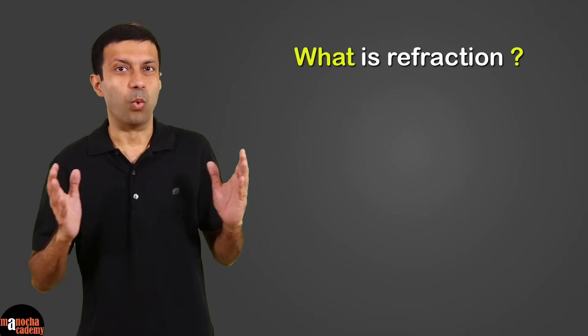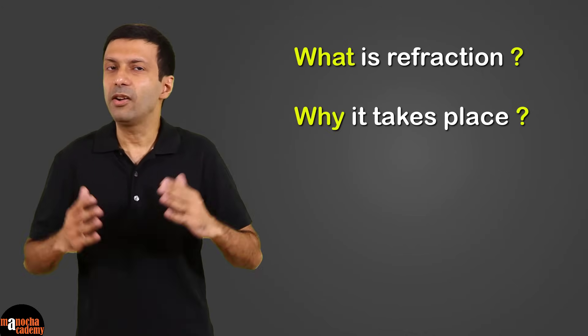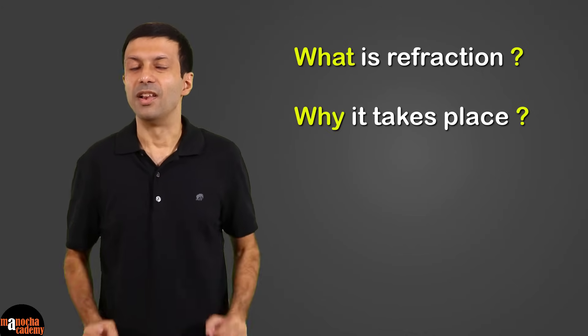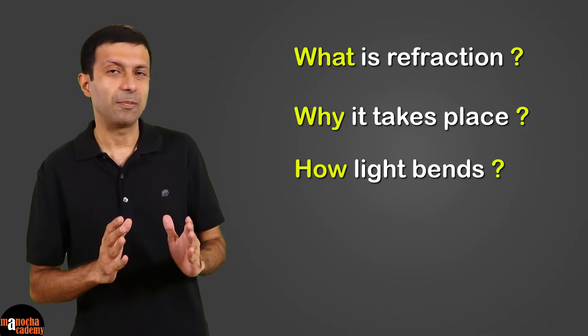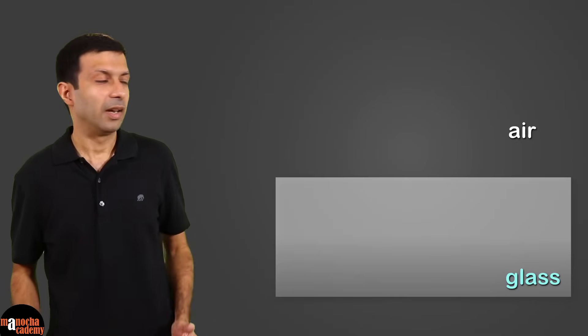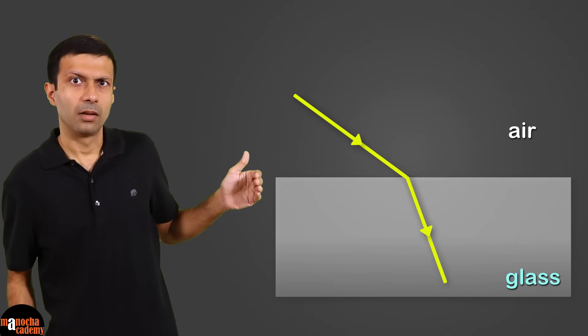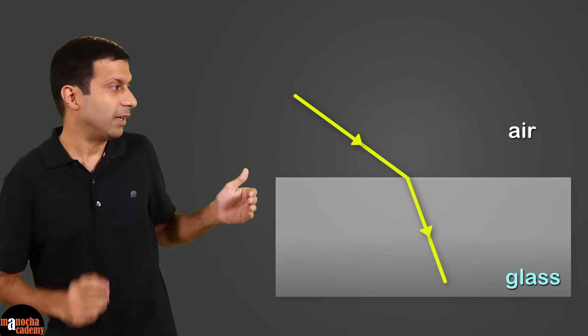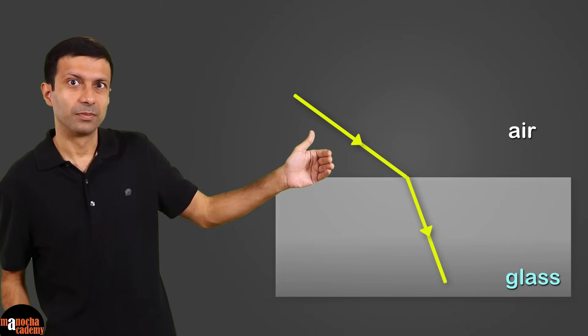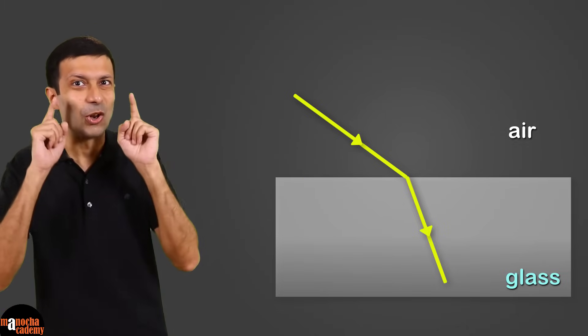We've seen what is refraction, why refraction takes place. Now let's take a look how light bends during refraction. In this case we saw light bends this way. But is it possible for light to bend the other way also? Let's go ahead and take a closer look.